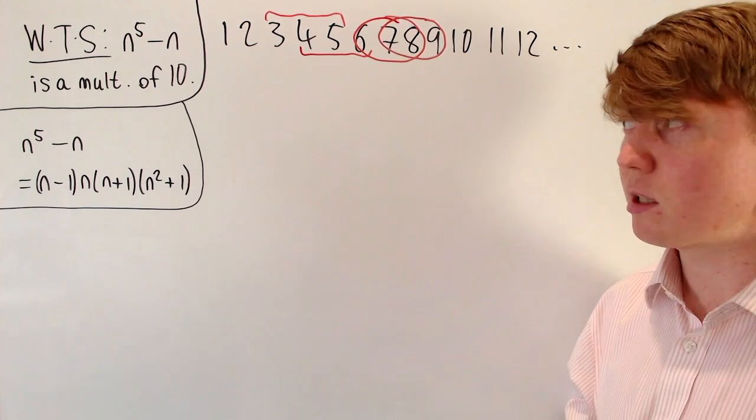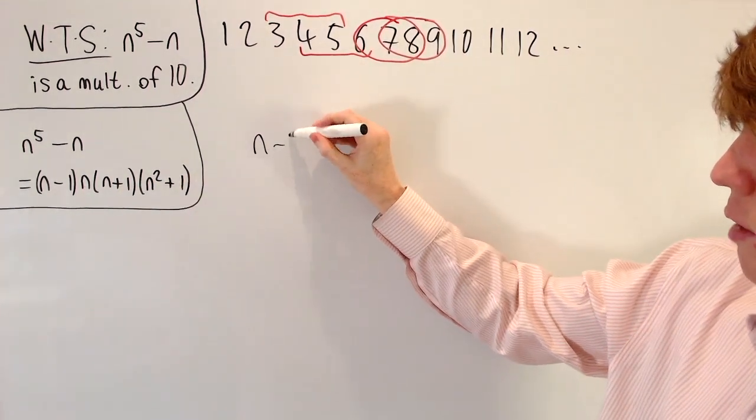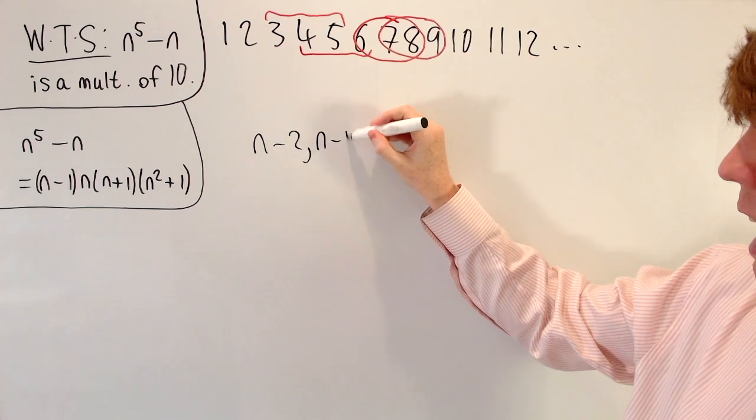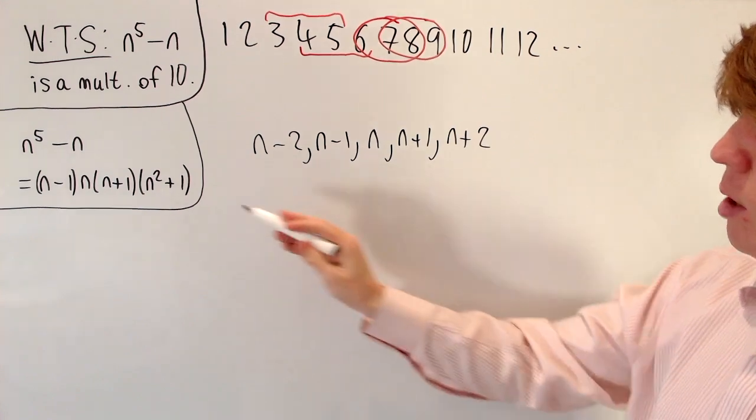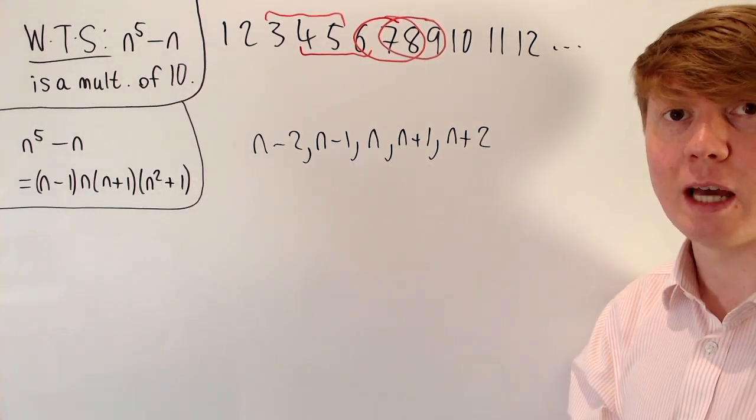So what we'll do is we'll consider the five consecutive integers n minus 2, n minus 1, n, n plus 1, and n plus 2. So maybe this n squared plus 1 term can help us out.